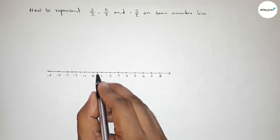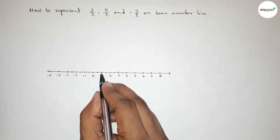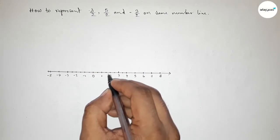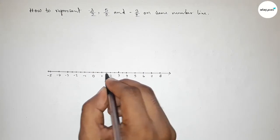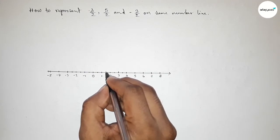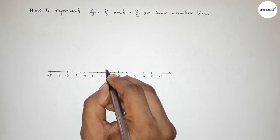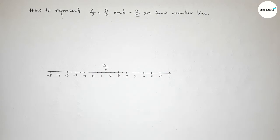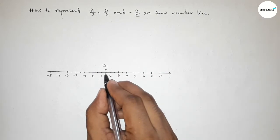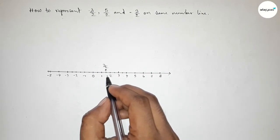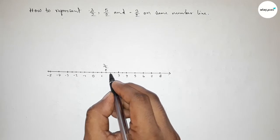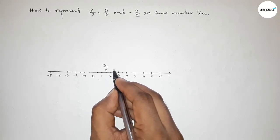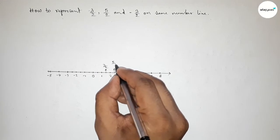Now representing 3/2: this is 1/2, this is 2/2, and this is 3/2 on the number line. So this point represents 3/2. Then this is 4/2 and this is 5/2 on the number line.